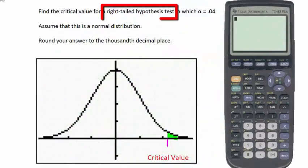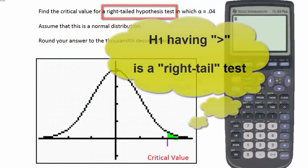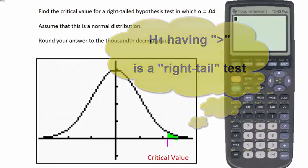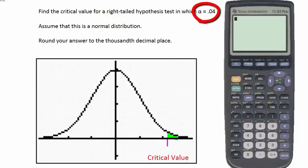A right-tailed hypothesis test would be a hypothesis test in which the alternative hypothesis has an inequality sign pointing to the right. In other words, a greater than inequality symbol. The level of significance, alpha, is again represented by the little green shaded area. Alpha is a percent. 0.04 is the decimal equivalent of 4%.